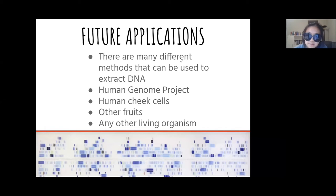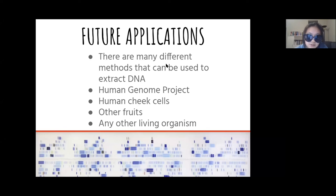What can we deduce from this? Strawberries have DNA just like us — every life form contains DNA. Our method of extracting DNA from strawberries is just one method of studying DNA from organisms, one of which would be the Human Genome Project. The Human Genome Project's purpose is to determine the DNA sequence of an entire human genome. A genome is a full set of genes in an organism. You can also apply the same procedure to other fruits, our own cheek cells, and any other living organism.